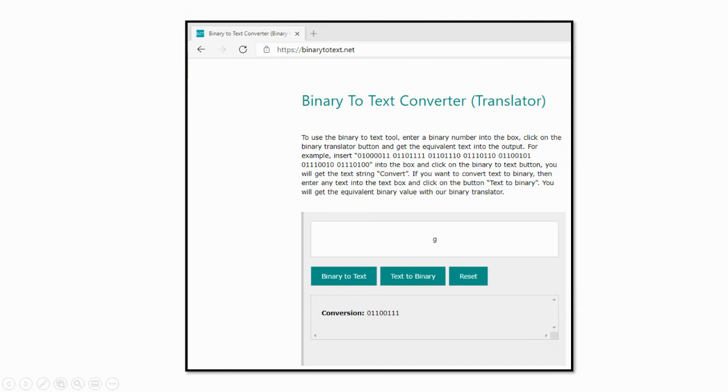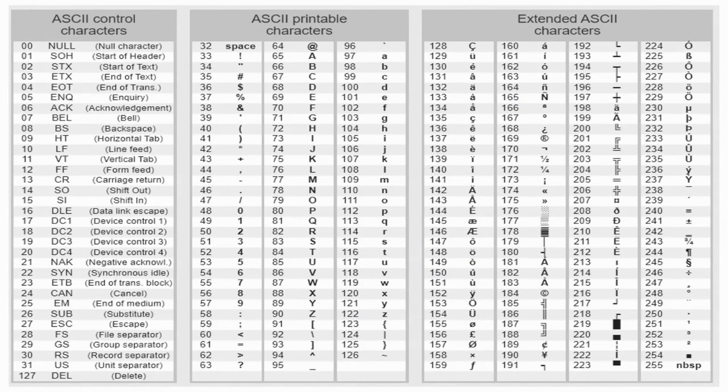So it's important to understand that you can do Google searches and find websites that automatically create binary numbers for you. But understanding how to get those values and convert those puts you a step above the rest. I hope this helped you. Thank you everyone.